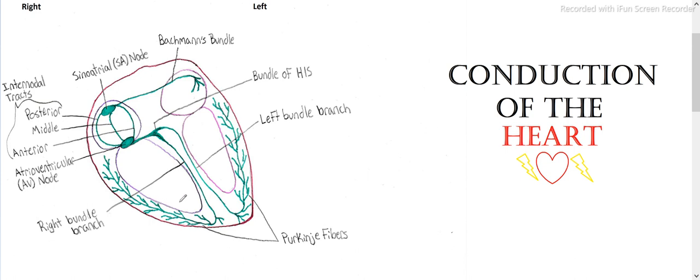These are the ventricles down here, the right ventricle and the left ventricle, these are the atria up here, right atria and left ventricle.